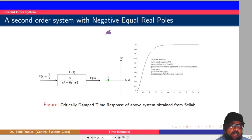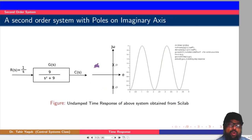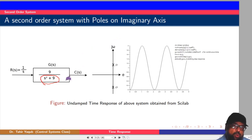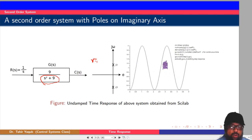The next case is a second order system with negative equal real poles. Finding the roots of this example equation gives both roots at minus three — the poles are real, negative, and equal — so the response will be critically damped. In the case where both poles are on the imaginary axis, finding the roots gives plus-minus j3. Here j is the square root of minus one (denoted with iota in mathematics, but j in control systems). In this case, the response will be sinusoidal or undamped, because it will always continue like a sinusoidal wave and will not decay.